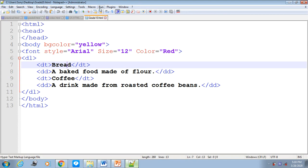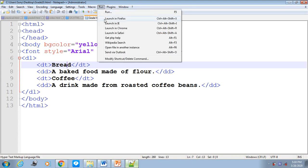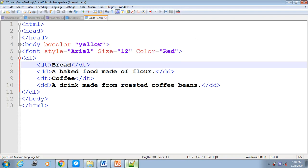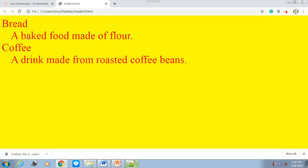Now let us save and run this, and you will understand once you see the final result. See here, 'bread' is a term, and 'a baked food made of flour' is the description about that word. That's the use of definition list.